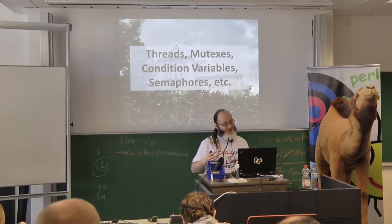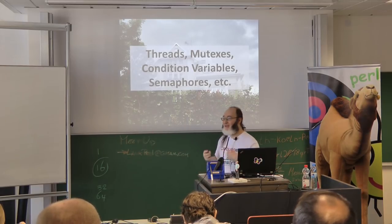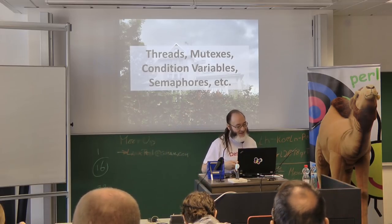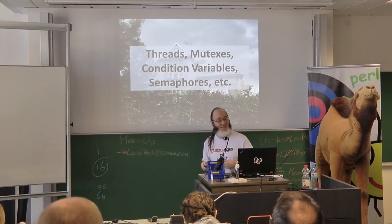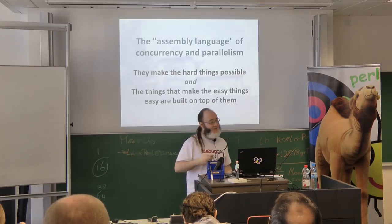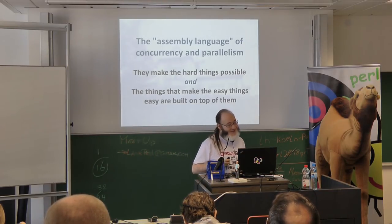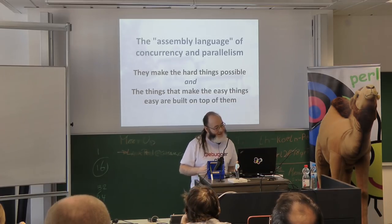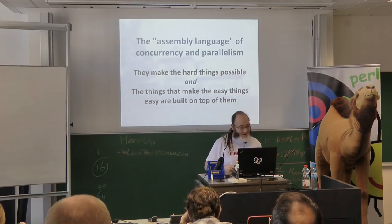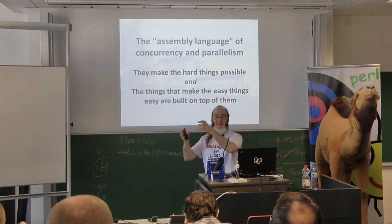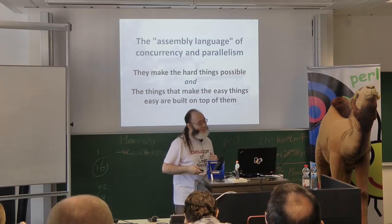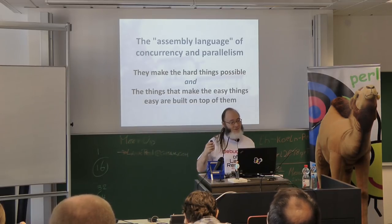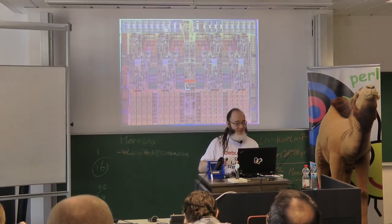Let's start with a model you can find in pretty much any language that gives you access to the primitives: threads, mutexes, condition variables, and semaphores. I think of these as the assembly language of concurrency and parallelism. They make the hard things possible and allow you to build easier things on top of them, but they are not necessarily pleasant to work with. Since everything builds on them, we'll spend a few minutes talking about them anyway.